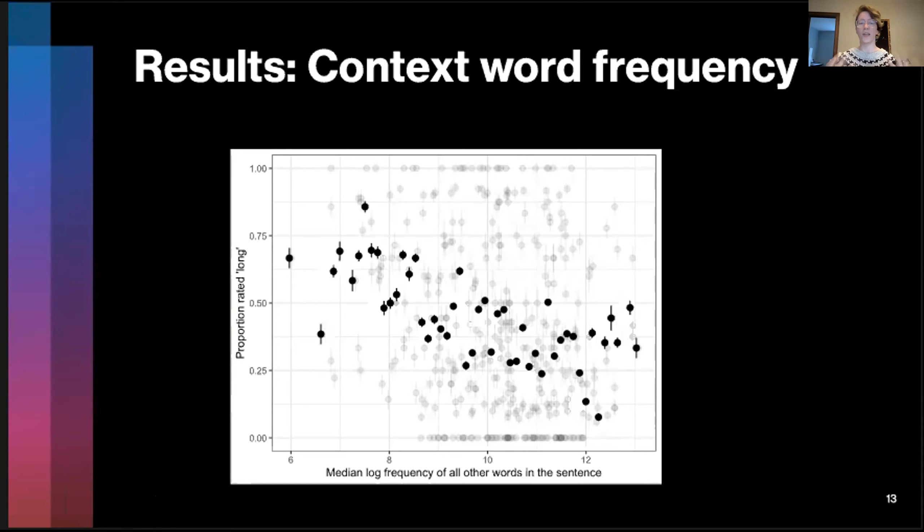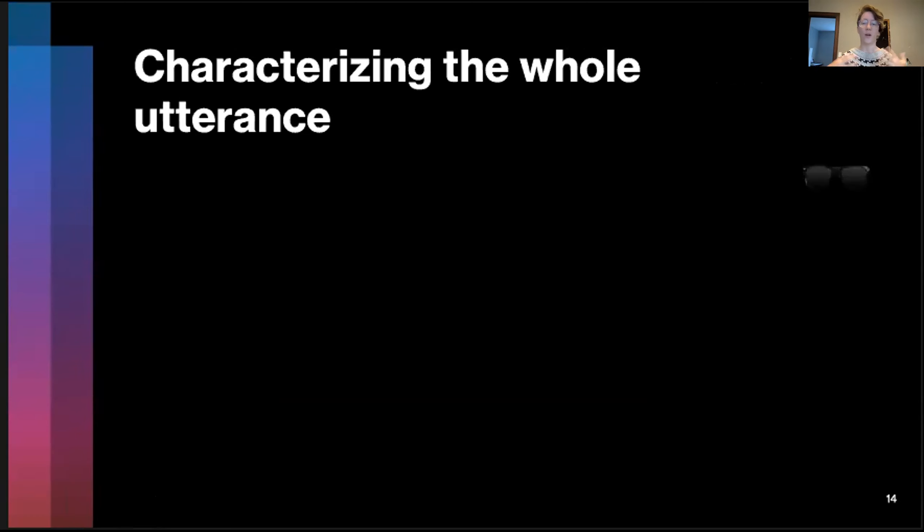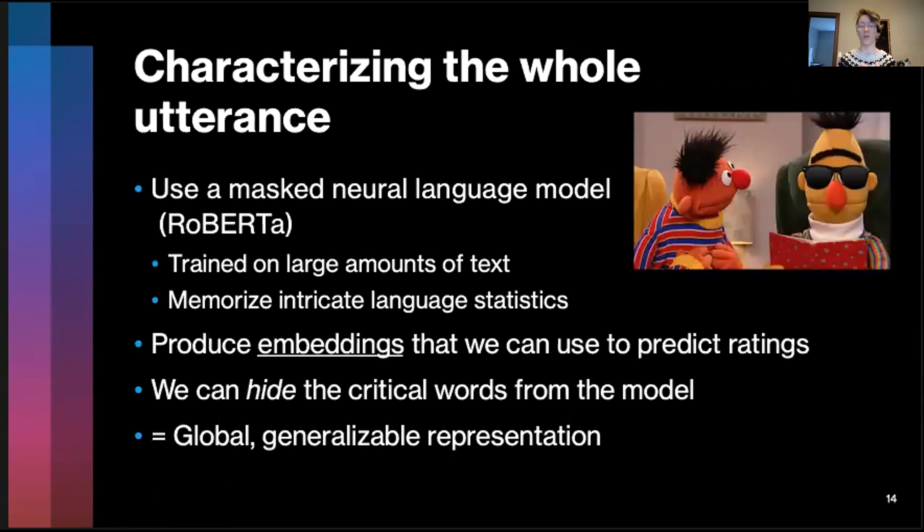This is just one really quick and dirty proxy. It's not sensitive to the content of the utterance. So what our next analysis does is attempt to characterize the entire thing. Basically, what we do is we use a masked neural language model known as RoBERTa that is trained on enormous amounts of text. It is enormously sensitive to nuanced statistics, and we use that model to generate an embedding—a very large, 700-something dimensional vector that we can then pop into a classifier to predict participants' ratings. The nice thing about these masked neural language models is we can hide the critical words from the representation, which means that we're not actually looking at the specifics of chimp versus chimpanzee, but rather something about all of the surrounding words in that utterance.